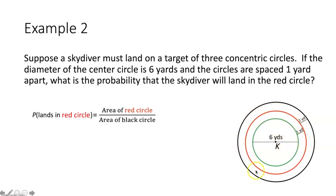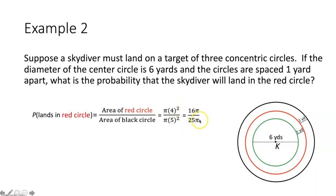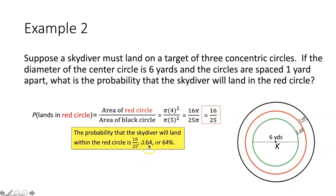Pi times 4 squared gives the area of the red circle. For the black circle, the radius is 3 plus 1 plus 1 equals 5 yards, so its area is pi times 5 squared. The ratio is 16 pi over 25 pi. Canceling pi gives 16 over 25, so the probability the skydiver lands in the red circle is 16 over 25, or 0.64, or 64%.